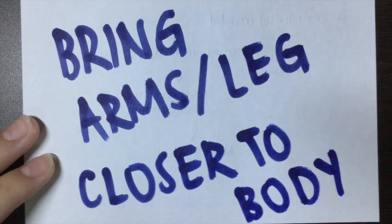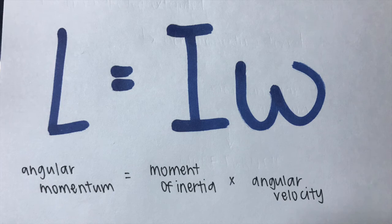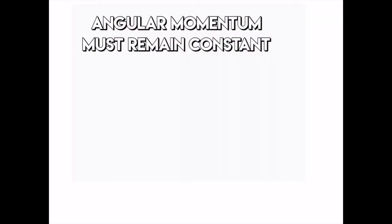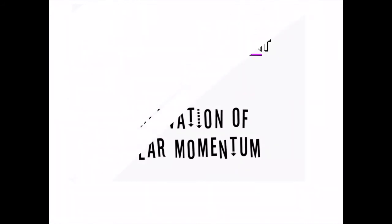Second, bring the arms or leg closer to the body. The foot is governed by angular momentum, which equals the dancer's angular velocity times the rotational inertia. Angular momentum has to stay constant for the dancer to keep spinning, which is called conservation of angular momentum.